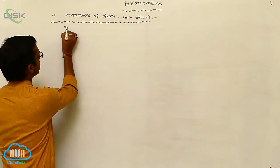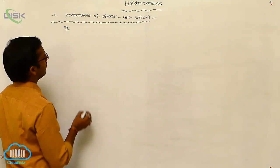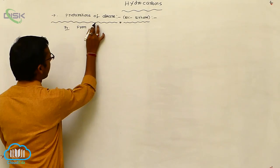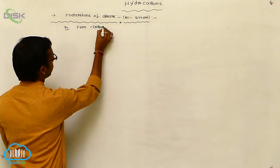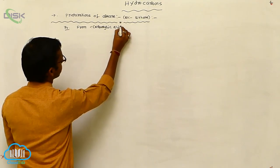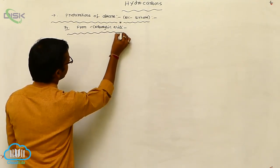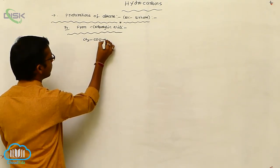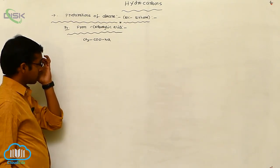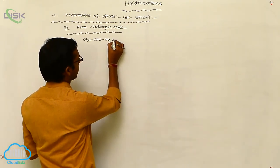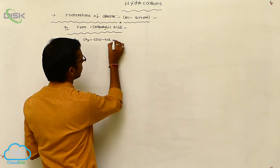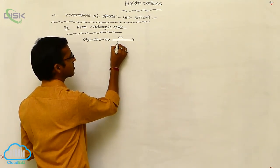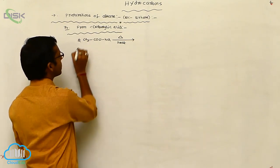Another preparation method for alkane is from carboxylic acid. The sodium salt of carboxylic acid undergoes a decarboxylation process. The sodium salt of carboxylic acid undergoes decarboxylation under thermal conditions.